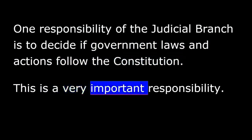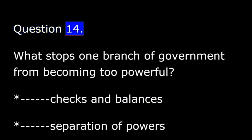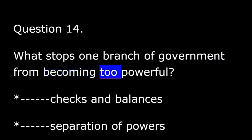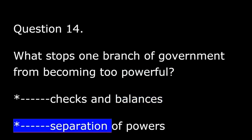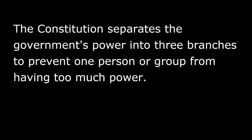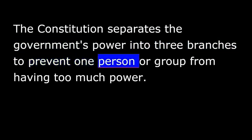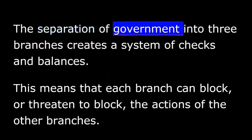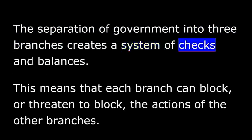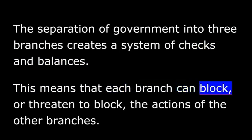Question 14. What stops one branch of government from becoming too powerful? Checks and balances. Separation of powers. The Constitution separates the government's power into three branches to prevent one person or group from having too much power. The separation of government into three branches creates a system of checks and balances. This means that each branch can block or threaten to block the actions of the other branches.